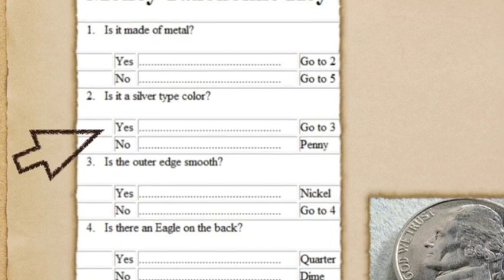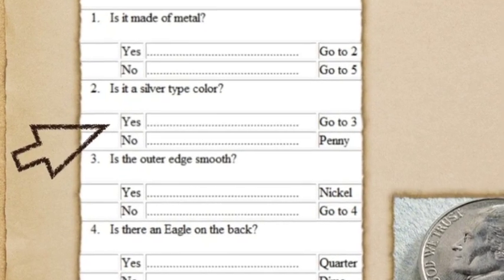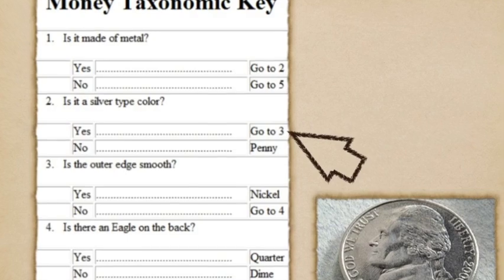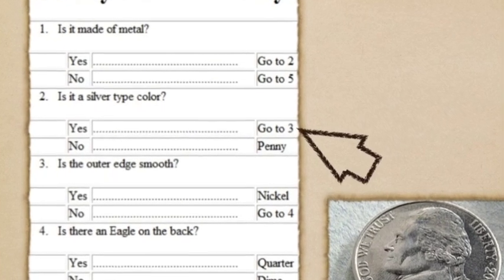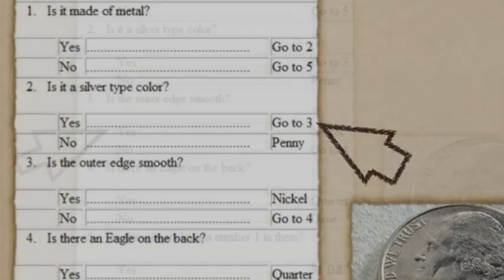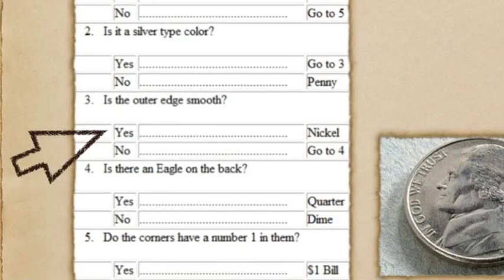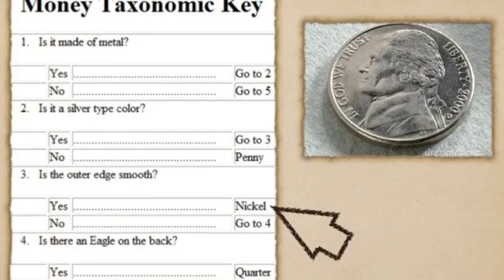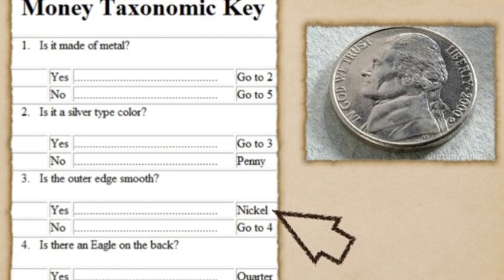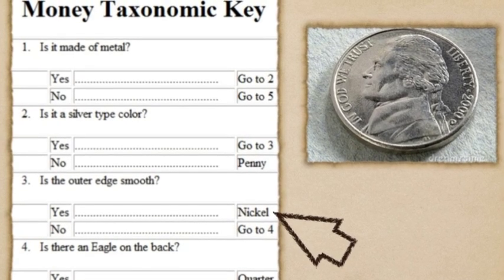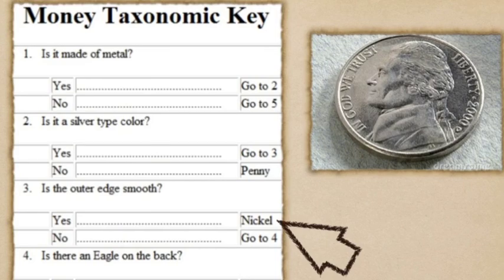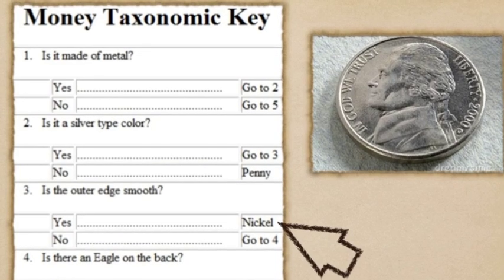Is it a silver type color? Yes or no. Our mystery coin is silver in color, so we would answer yes. That being the case, we go to question three: is the outer edge smooth? After closer observation of our coin, we see that it does indeed have smooth edges. Therefore, we have utilized our dichotomous key for money identification to find out that our mystery coin is a nickel.